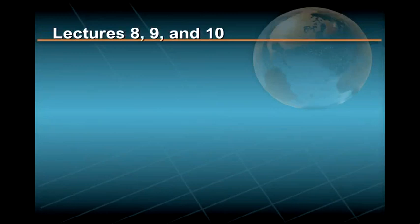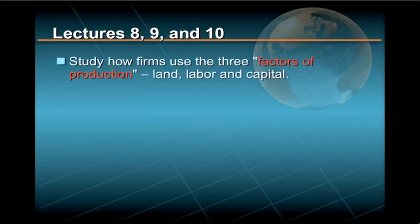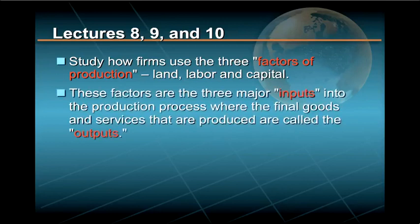In lectures 8, 9, and 10 of our studies, we'll delve further into the business side of the supply and demand equation by studying how firms use the three so-called factors of production: land, labor, and capital. These factors are the three major inputs into the production process, where the final goods and services that are produced are called the outputs.